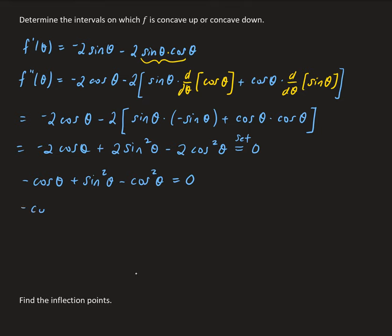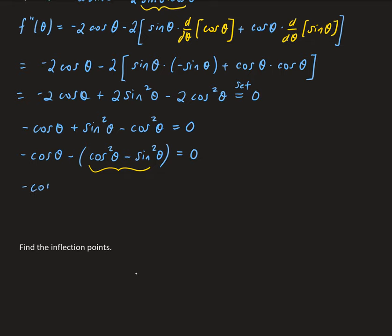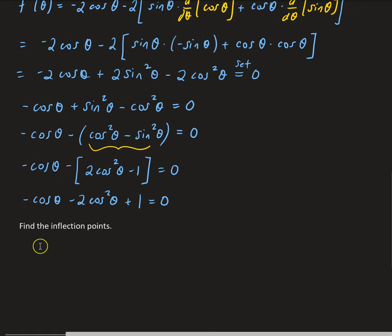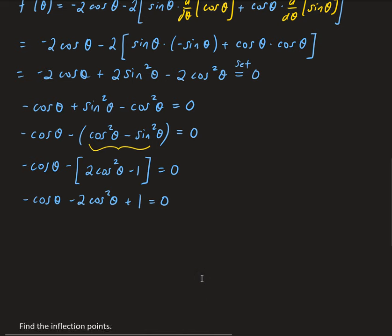We rewrite as minus cosine theta minus (cosine squared theta minus sine squared theta) equals 0. Using the trig identity, cosine squared theta minus sine squared theta equals 2 cosine squared theta minus 1, so we replace that to get everything in terms of cosine: minus cosine theta minus 2 cosine squared theta plus 1 equals 0.